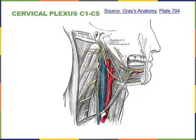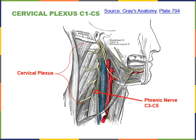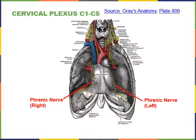An illustration shows the cervical plexus arising from C1 through C5, carrying information to and from the neck, shoulders, and posterior regions of the face. The phrenic nerve arises from the lower three ventral rami, C3 through C5, and excites contraction of the diaphragm. It can be seen extending down on both the right and left to innervate the diaphragm.